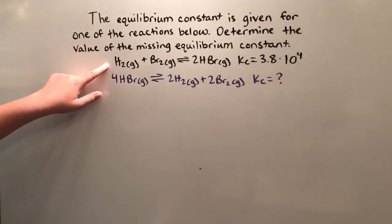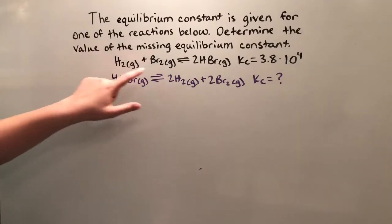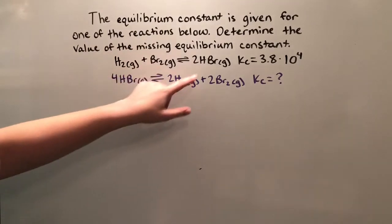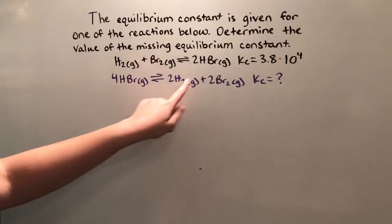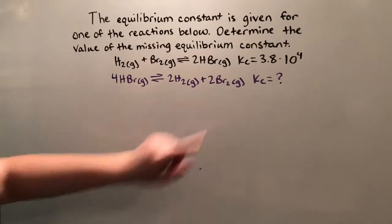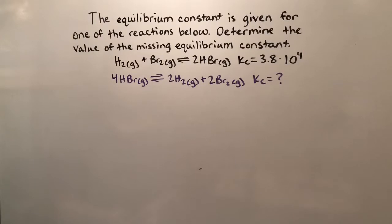If you notice, in this equation we went from one mole of H2 gas, one mole of Br2 gas, two moles of HBr gas, to two moles of H2 gas, two moles of Br2 gas, and four moles of HBr gas.